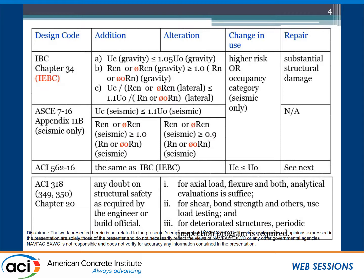For lateral load — wind or seismic — the codes don't look at individual elements; they use the demand-to-capacity ratio (D/C). With a 10% increase in D/C, you go to new structure requirements. ASCE 7-16 handles it differently for seismic — lateral load — allowing a 10% increase or 10% decrease as the trigger to apply the original code. For change in use, if you change to a higher occupancy or risk category, you only need to satisfy the seismic requirement for that. For repair, IBC Chapter 34 defines substantial structural damage as a capacity decrease over one-third (33%), requiring repair as a new structure; otherwise you can repair to the pre-damaged state.